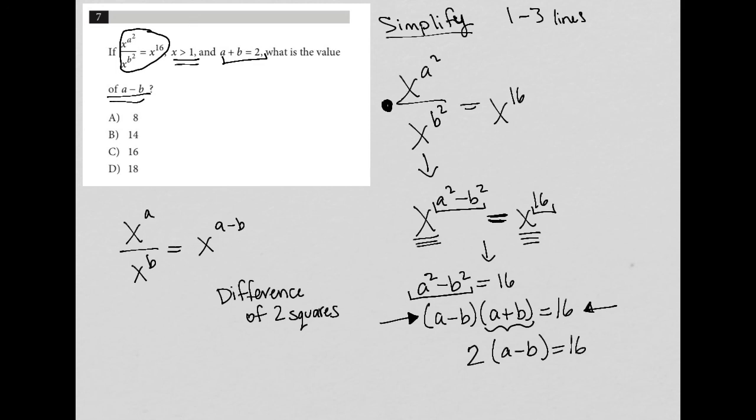So I can simplify this by dividing by two. And then the twos cross out. And I'm left with, let's get up here to some more space, I'm left with a minus b equals eight.